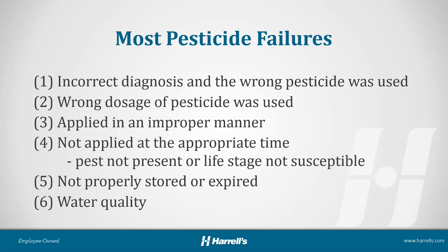When it comes to pesticide failures, most people want to jump straight to resistance. But I want to focus on more common causes first. First and foremost: an incorrect diagnosis. If you're using a pesticide that's very selective and targets the oomycete group like Pythium or Phytophthora, and you're using that product for an anthracnose disease, you're going to have a poor experience. So it's really important to get a diagnosis, use a credible lab, and then make an informed decision.